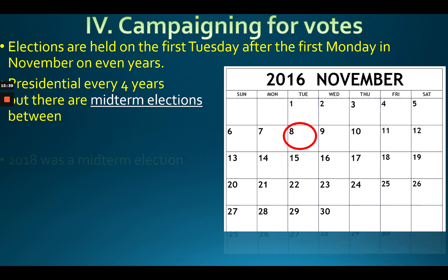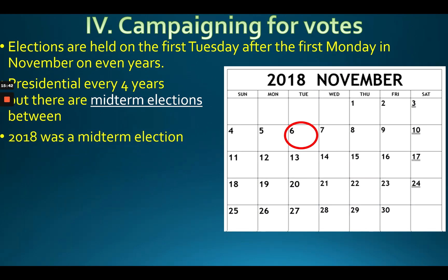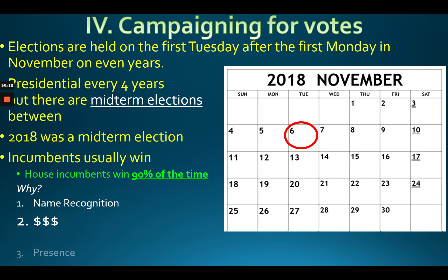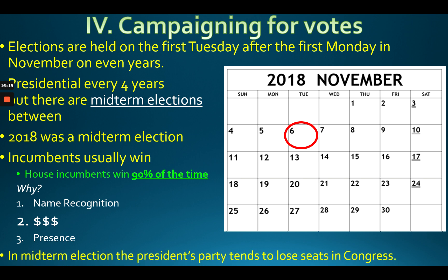Voter turnout is lower in midterm elections because of less media exposure and people feel their vote matters more when the president is running. 2018 and 2022 had midterm elections; 2020 was the presidential election when Biden beat Trump. In the House of Representatives, incumbents win 90% of the time because of name recognition, money, and presence.